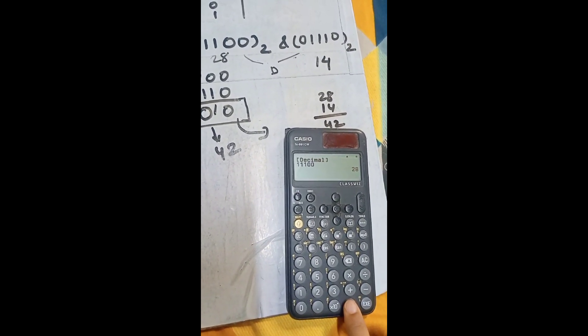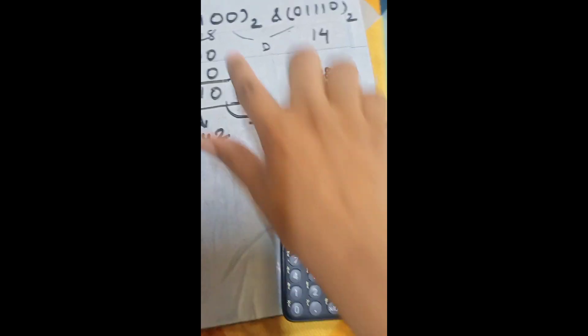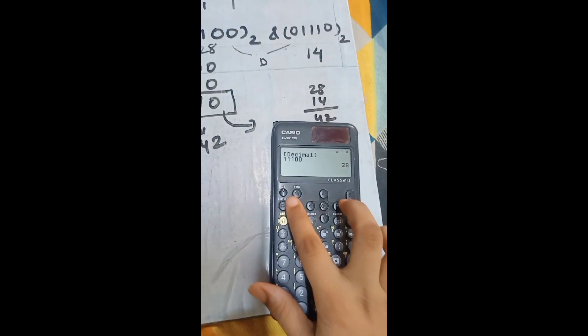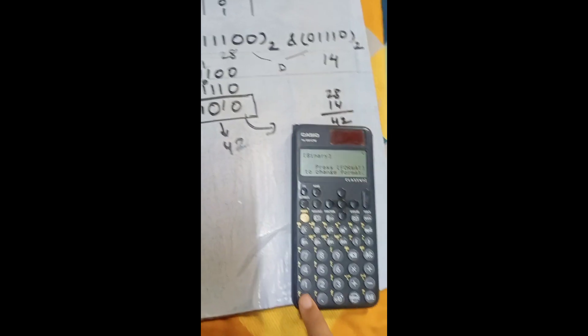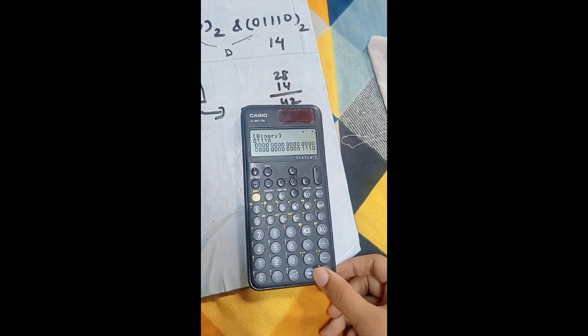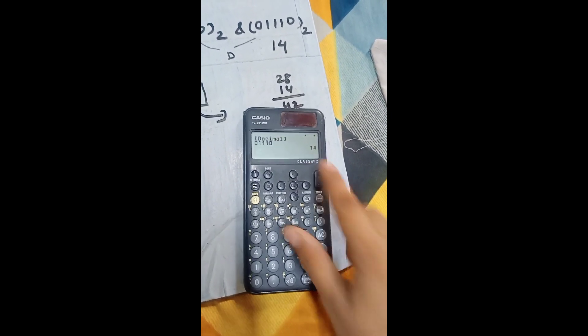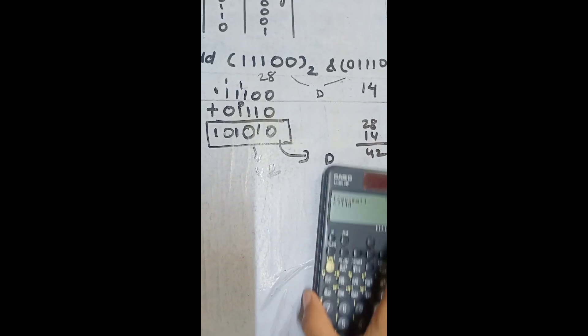Change the format. So, triple 1, double 0 in decimal is 28 and 0, triple 1, 0 is 14. Okay? So, 28 plus 14 is 42.